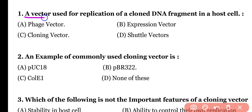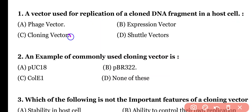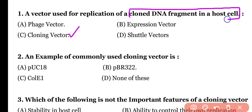A vector used for replication of a cloned DNA fragment in a host cell is known as: phage vector, expression vector, cloning vector, or shuttle vector. Correct answer is option C. Cloning vector is used for the replication of a cloned DNA fragment in a host cell.